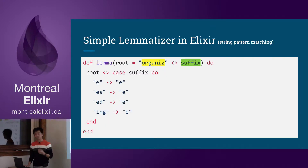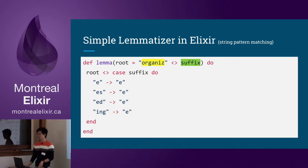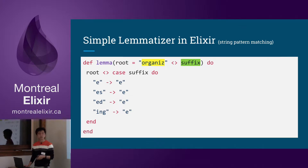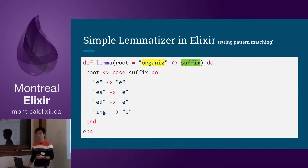So how would you do this in Elixir? I'm very fortunate that Mark presented how you do pattern matching, because essentially we do pattern matching. We have a root — root equals 'organize'. We pattern match on the root. Root becomes 'organized', you have a suffix. Based on the suffix, if you see an 'e', you return an 'e'. If you see 'es', it means 'organizes', but you still return 'organize' — the lemma. So you take the word, look at the suffix, and process it so the word returns its essential form.